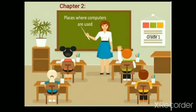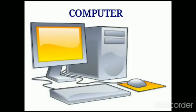Chapter 2: Places where computers are used. Dear students, you know that different machines do different types of work. Similarly, a computer is a useful machine. Nowadays a computer has become an important part of our day-to-day life. It makes our work fast, correct, and accurate. Computers are used in many places. Let us see the places where computers are used.